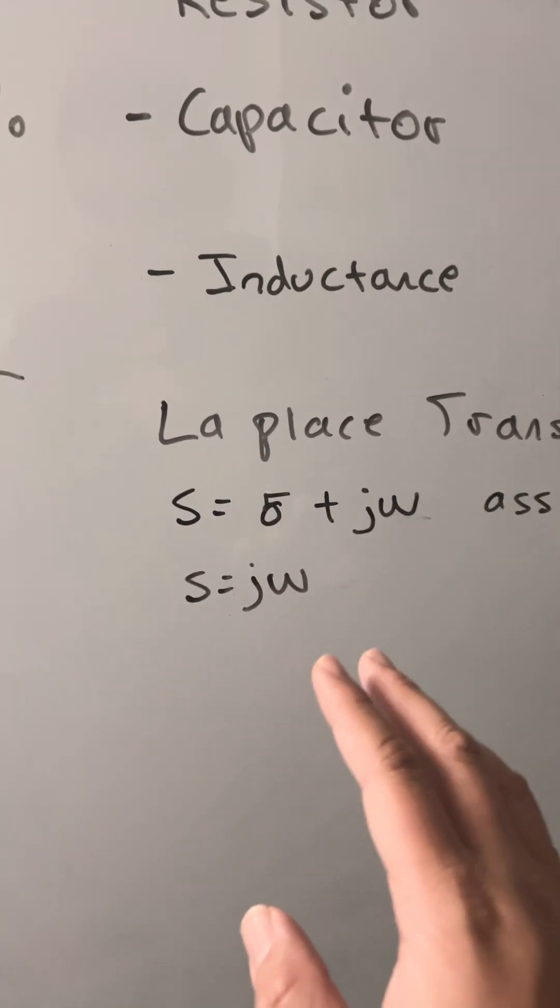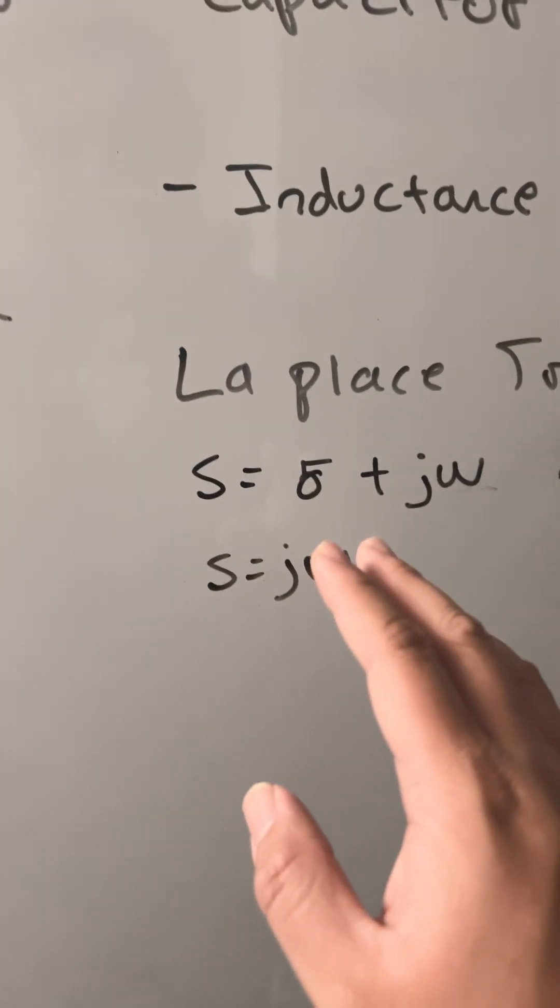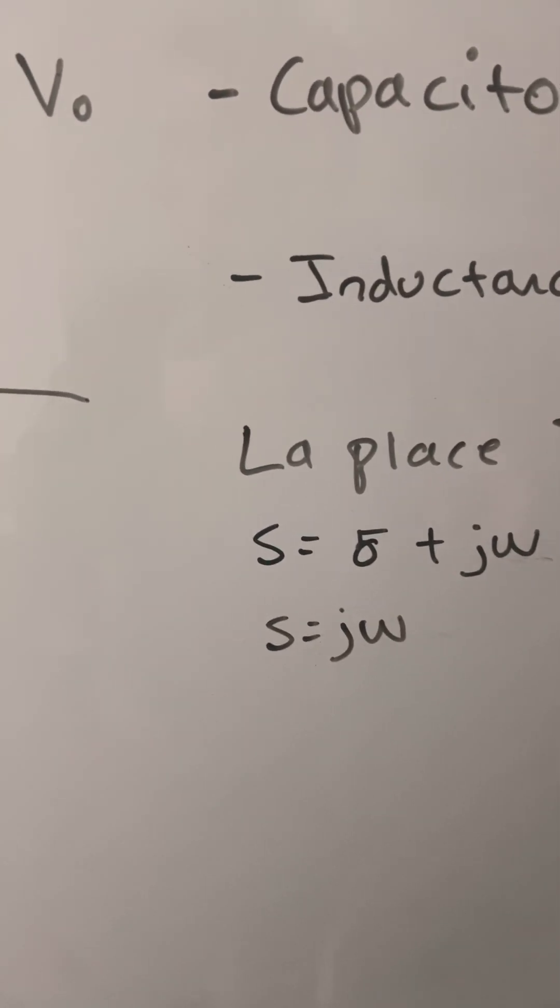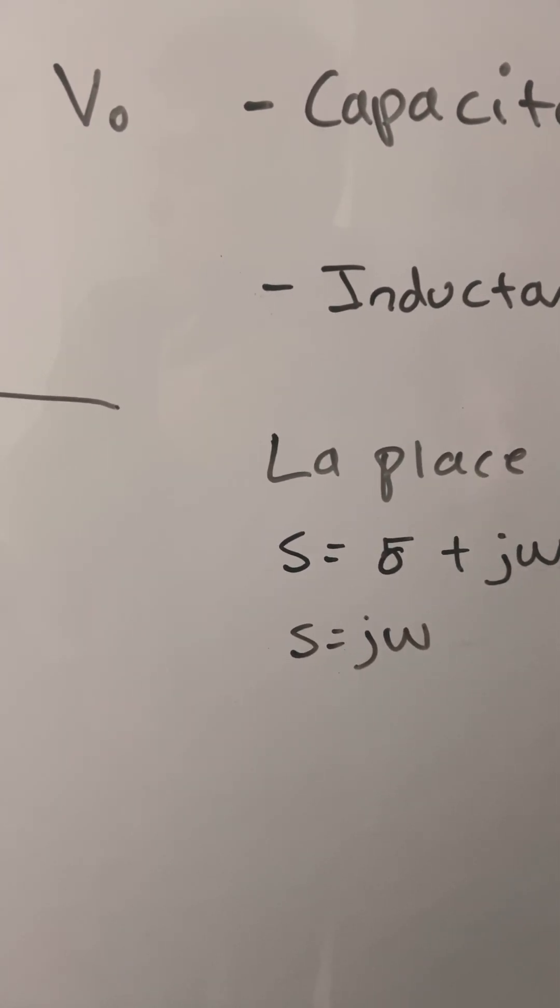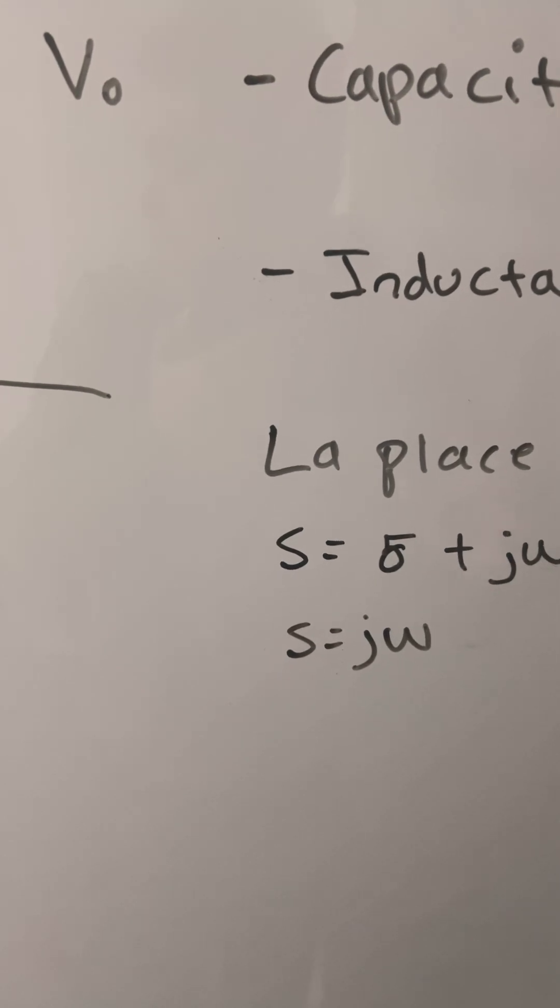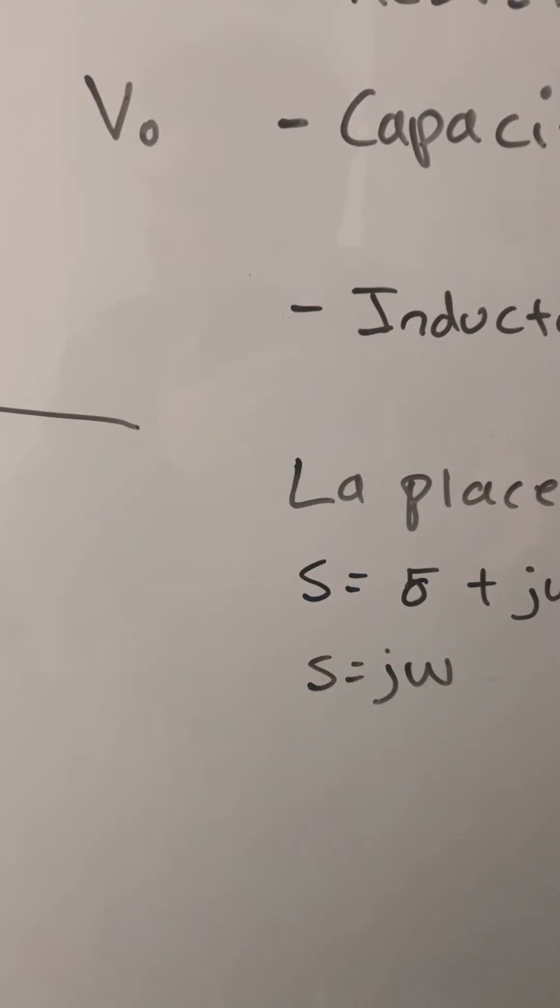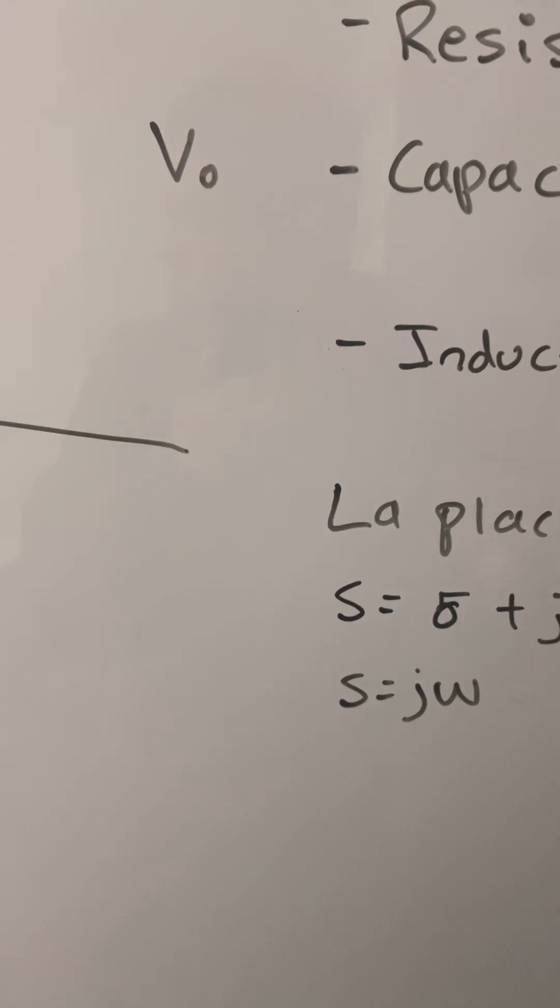so you will be left with S equals j omega. The reason why S equals j omega is chosen is to evaluate AC signals that allows to convert the Laplace transform into Fourier transform.